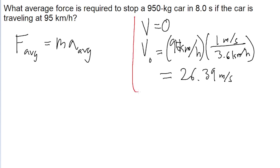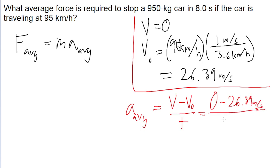So now that we have this, we want to find the average acceleration. Now acceleration is, of course, equal to a change in speed divided by time. So that's the final speed minus the initial speed divided by time. So that is our final speed of zero minus our initial speed of 26.39 meters per second, and that is divided by the amount of time it took, which is given in the problem as 8 seconds. Put that into a calculator, and our average acceleration is negative 3.299 meters per second squared.